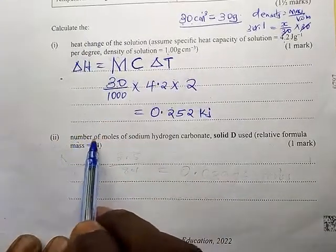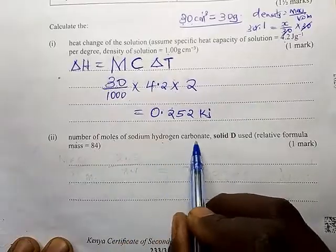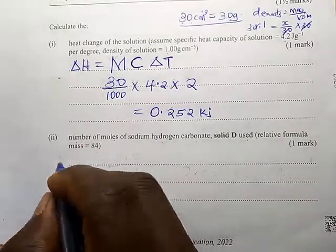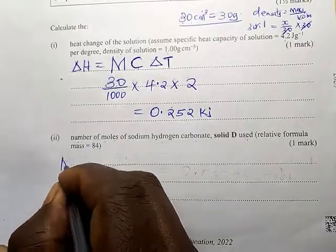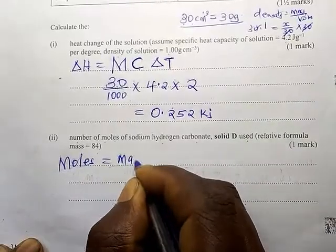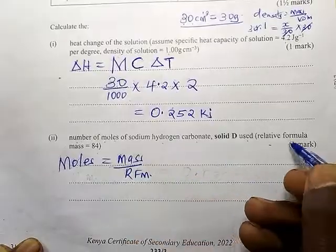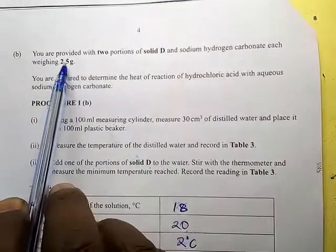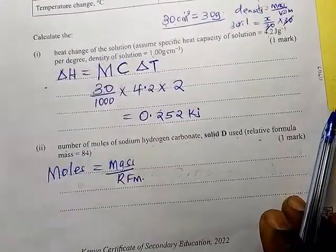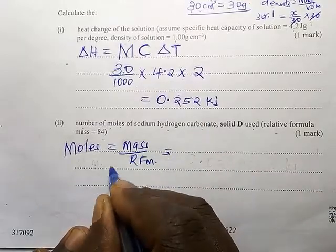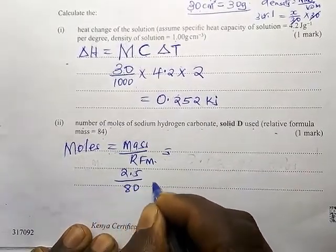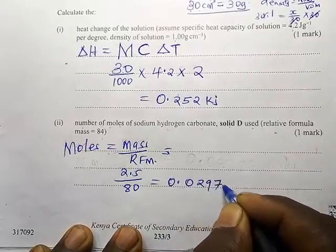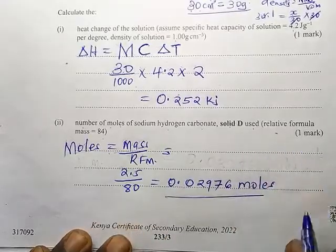Now calculate the number of moles of sodium hydrogen carbonate. Solid D has a relative formula mass of 84. Moles equal mass divided by RFM. The mass of solid D was 2.5 grams, so we calculate 2.5 divided by 84, which gives us 0.02976 moles. That is the number of moles of solid D.